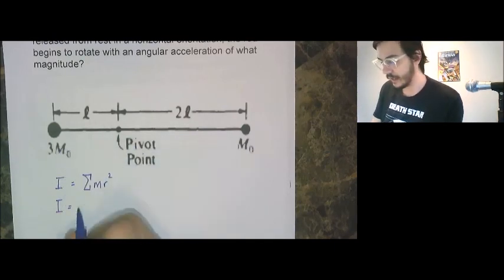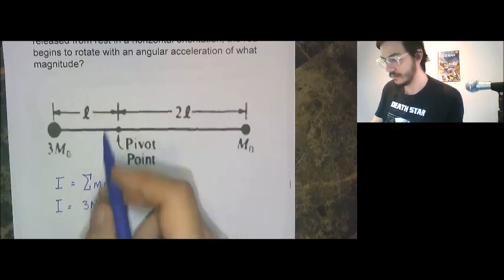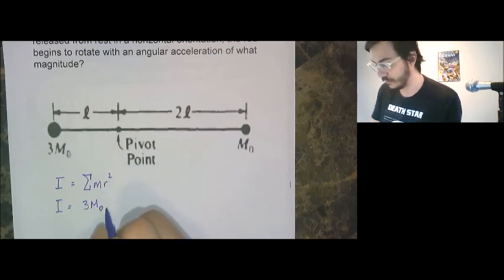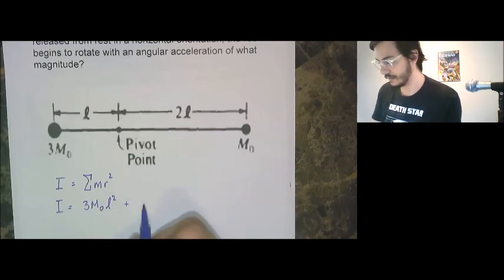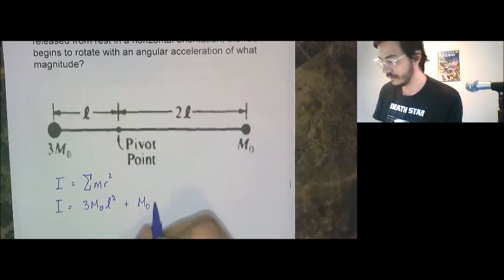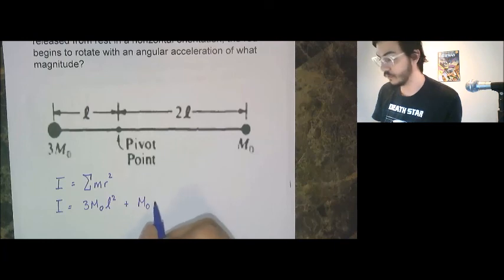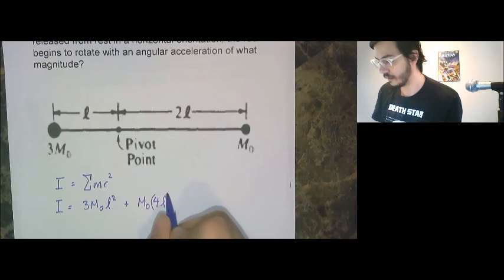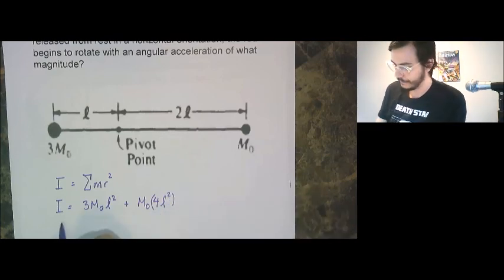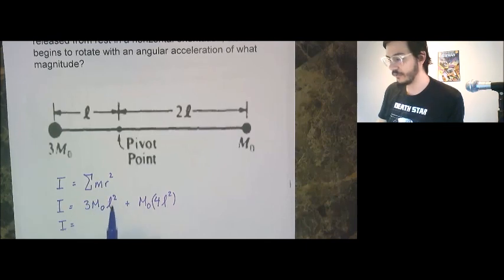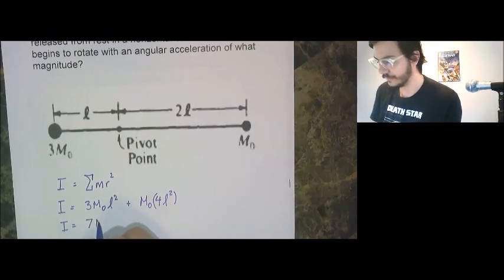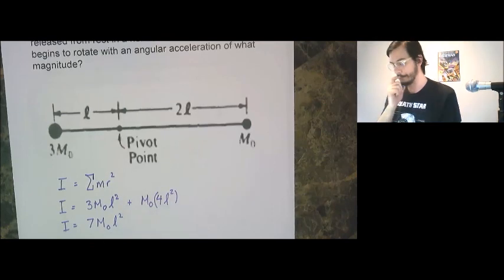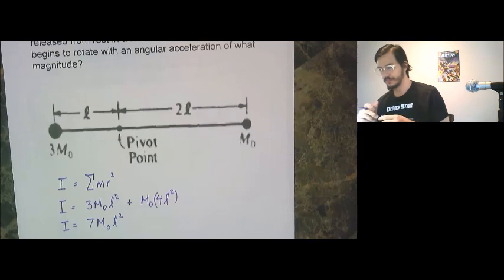Now sum means that we can just find what we've got and add them together. So the mass on this side is 3 mass naught. And it is L away from the fulcrum as the radial distance, which must be squared. Sum, which means add M naught on the other side. 2L, but 2L gets squared. So it'll be 4L squared. 3 mass naught L squared plus 4 mass naught L squared. But 3 plus 4, 7 is the important thing. 7 mass naught L squared.